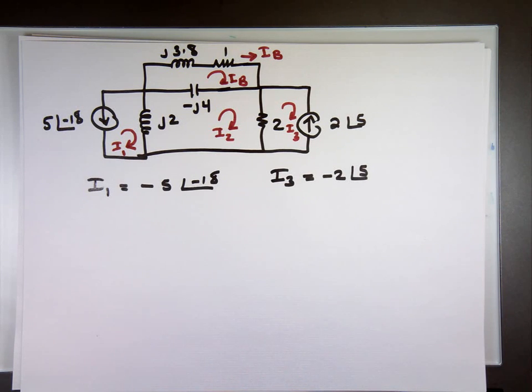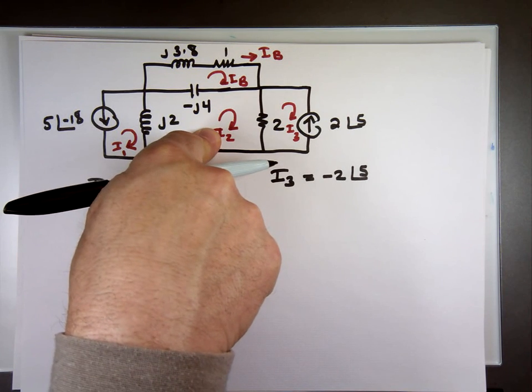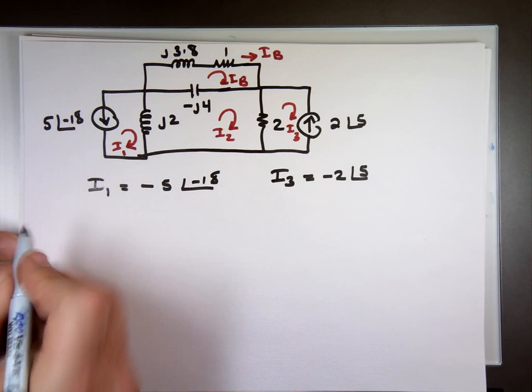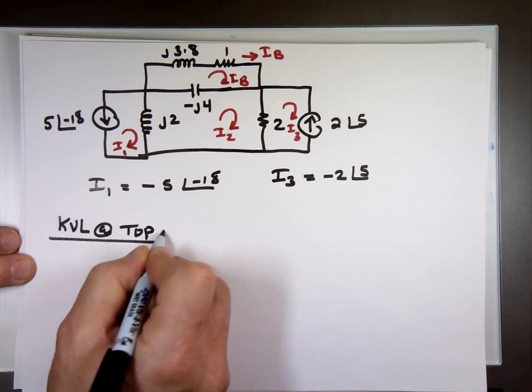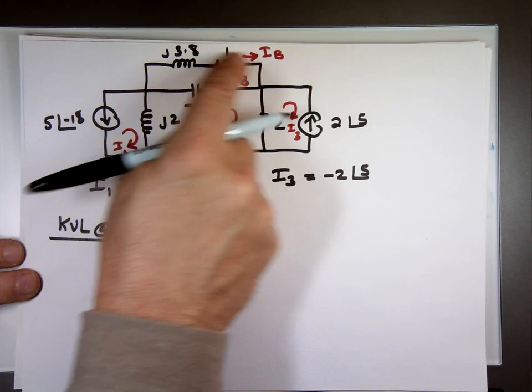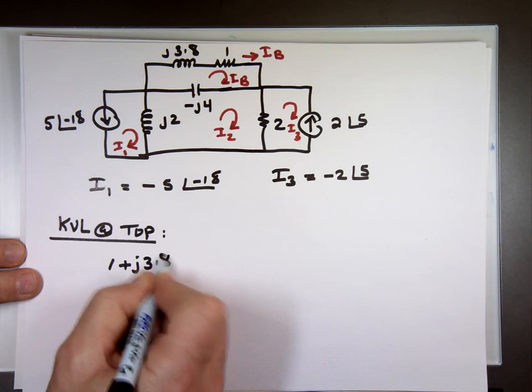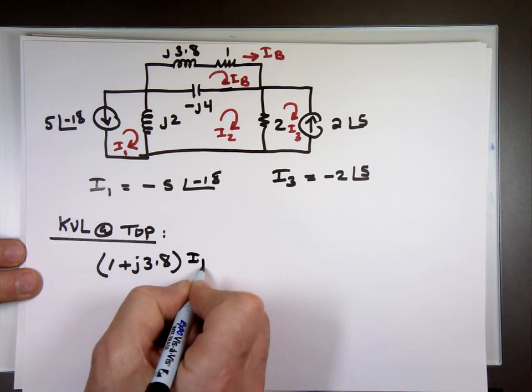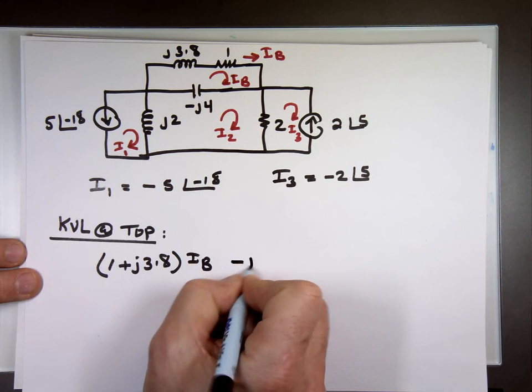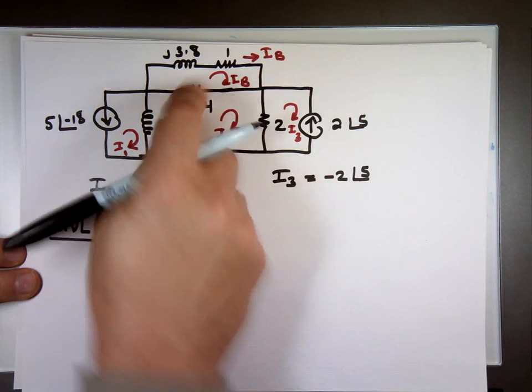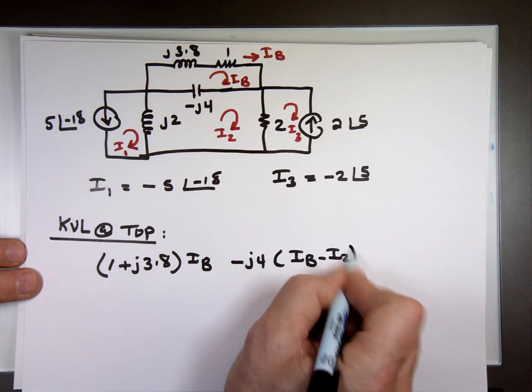So if I do KVL, sum of the voltage in a closed loop is zero. This is one closed loop on the top. There's another closed loop on the bottom. So let's see what we have. The top, KVL on the top. Sum of the voltage in a closed loop is zero. I can combine these guys into one. One plus J3.8. And what's going through that? I sub B. Continue right there. Minus J4. That's this one. What's the current going through it? I sub B minus I sub 2. Very good. Equals zero.